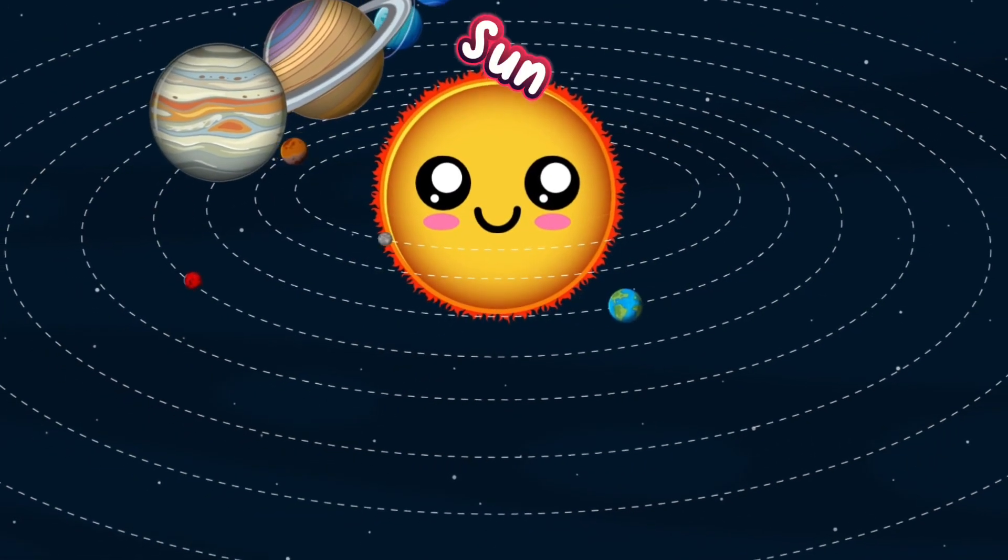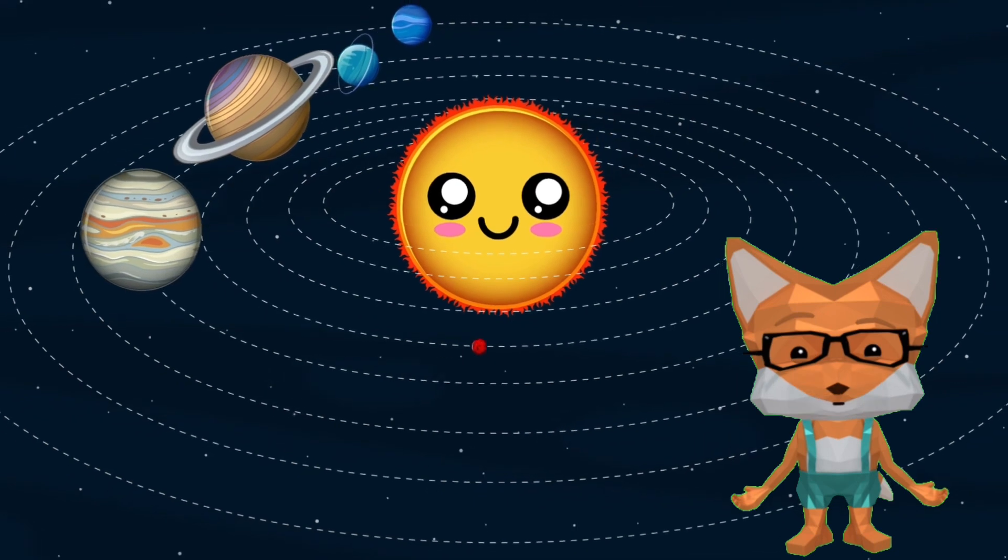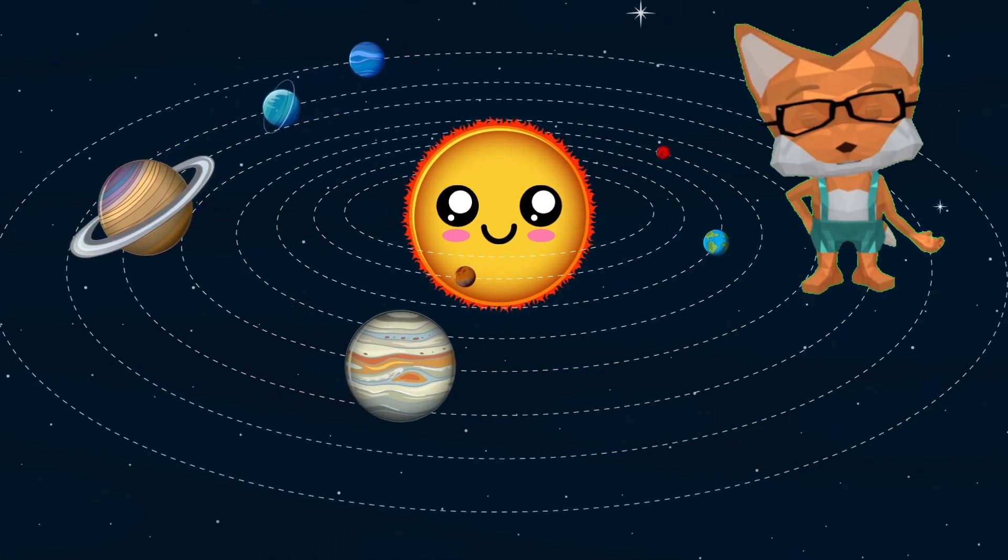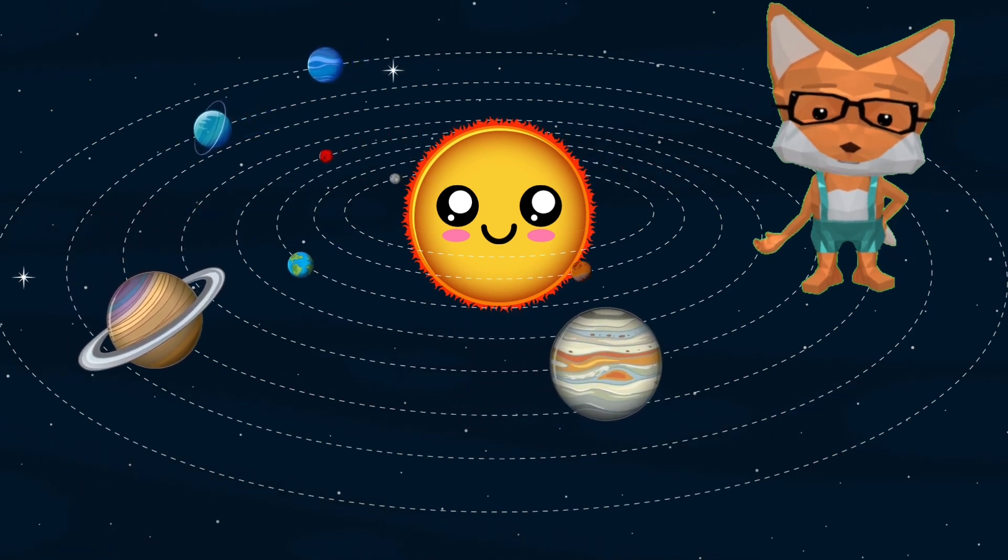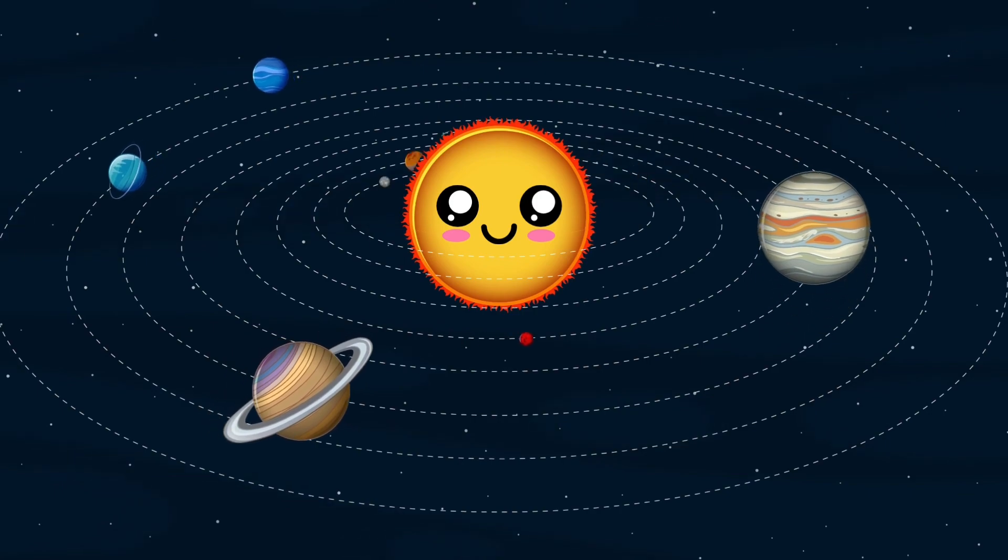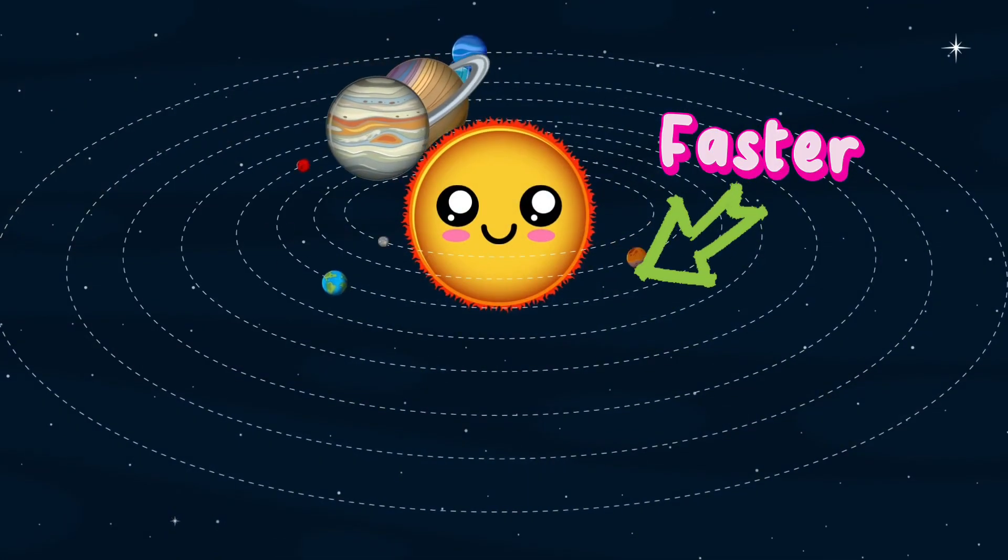The one in the middle smiling at you is the sun. It's so big that it could fit a million Earths inside. Planets are dancing around the sun. The closer a planet is to the sun, the faster it goes around.